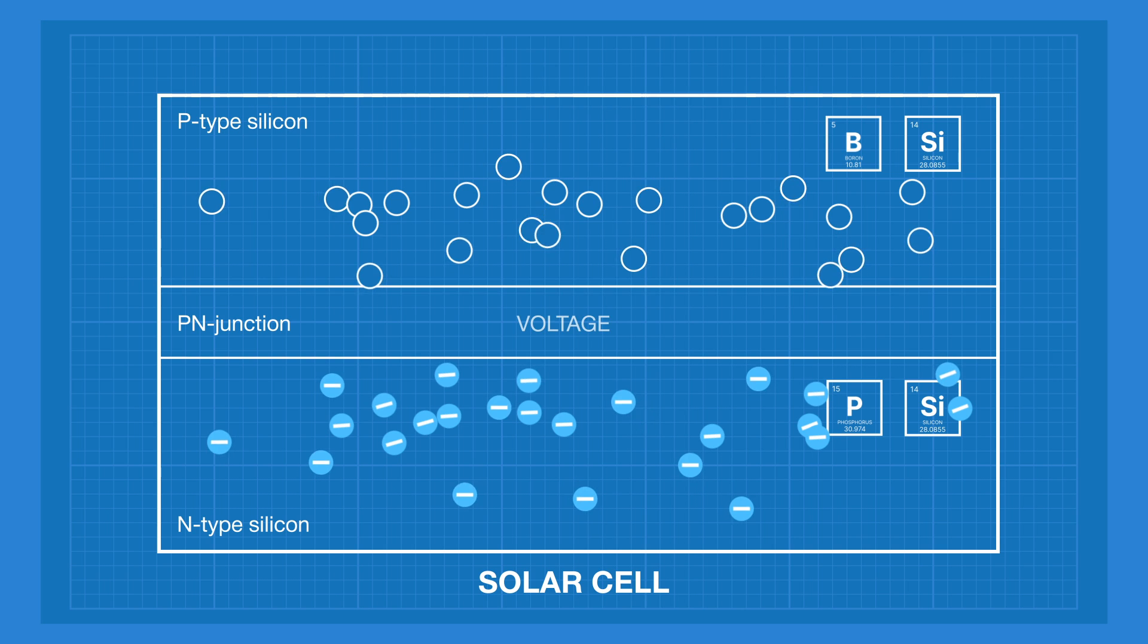Thin metal fingers at the top of the cell collect mobile electrons and send them through the wires. And that's when electrons do the work for us and power everything we have. By itself, solar panels produce direct current.